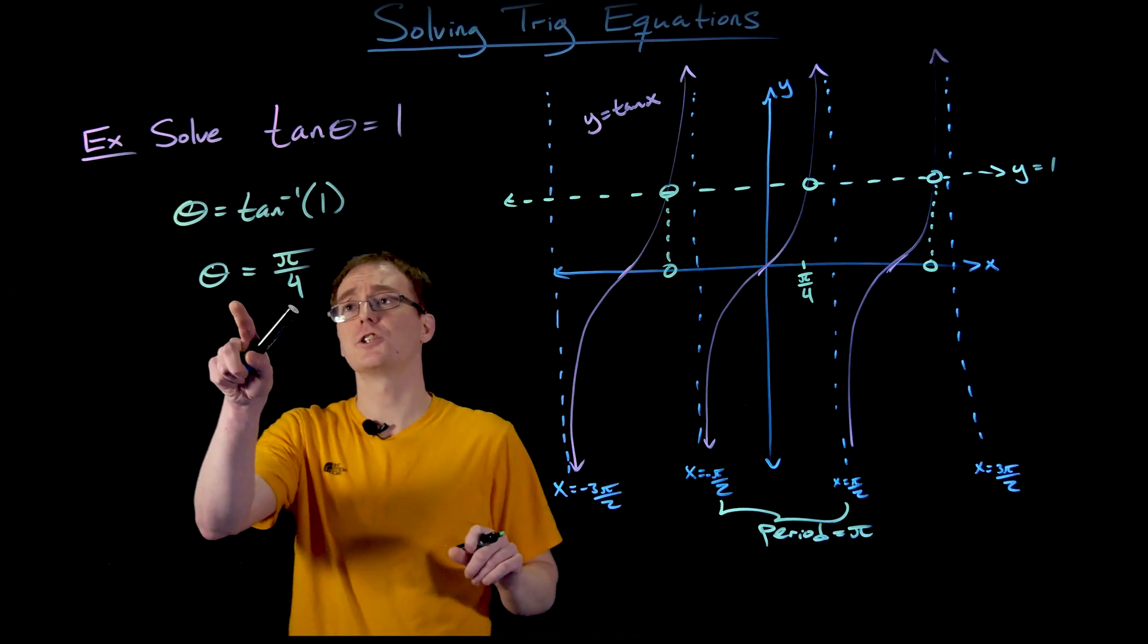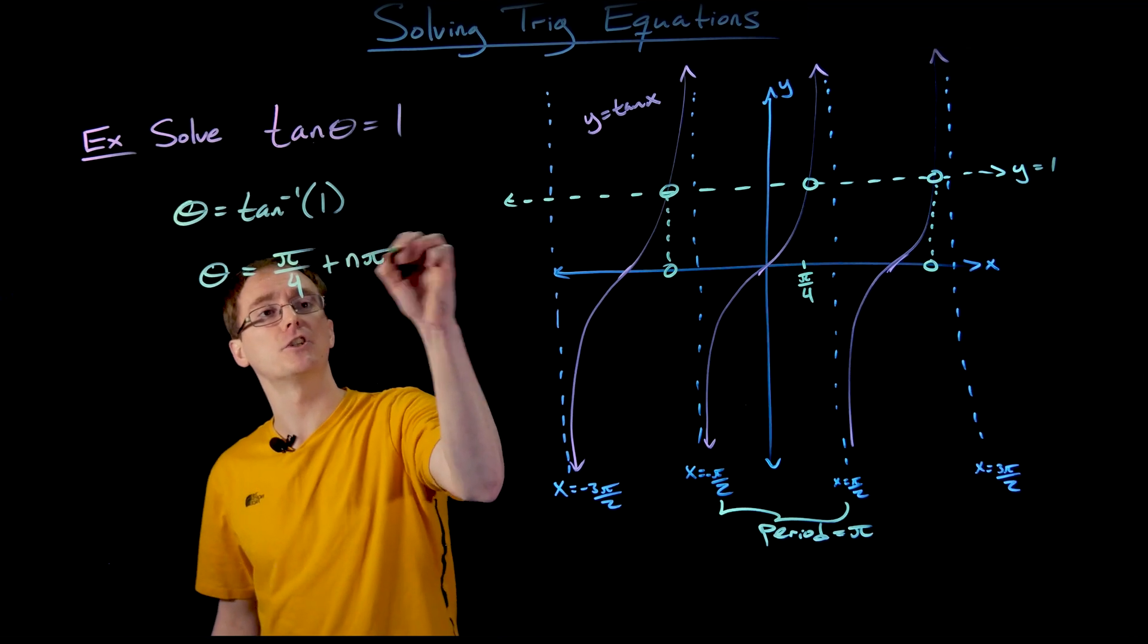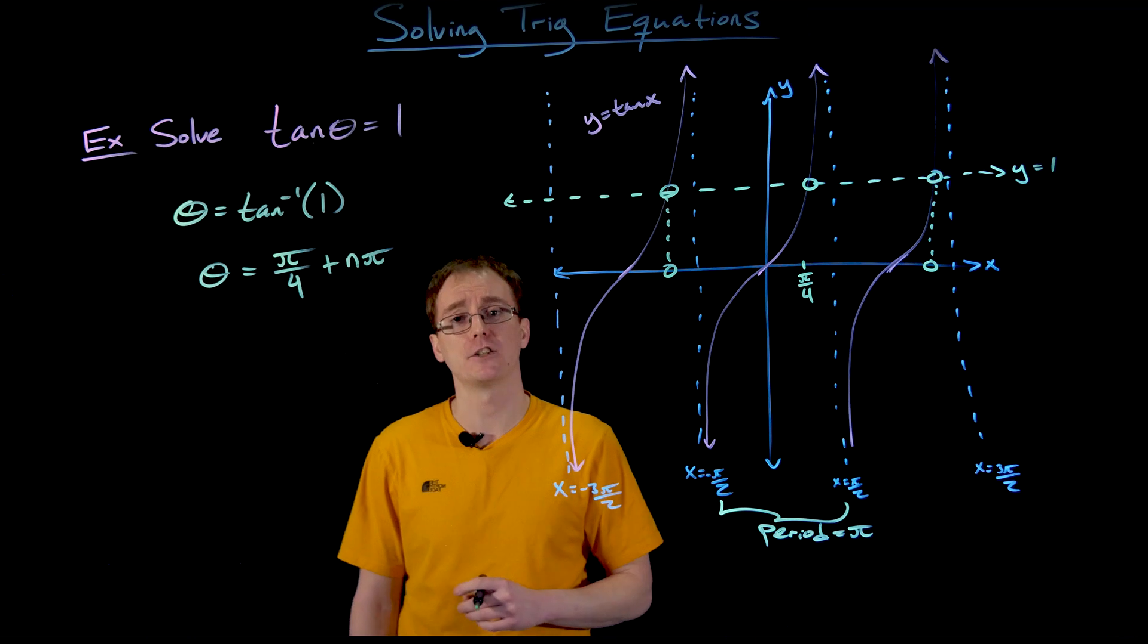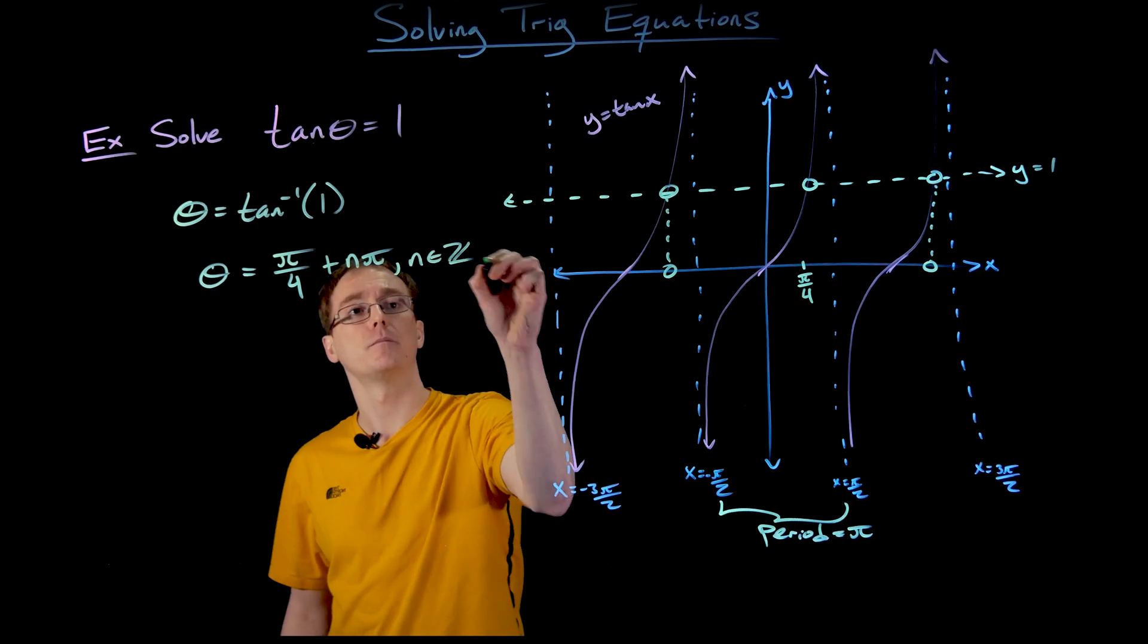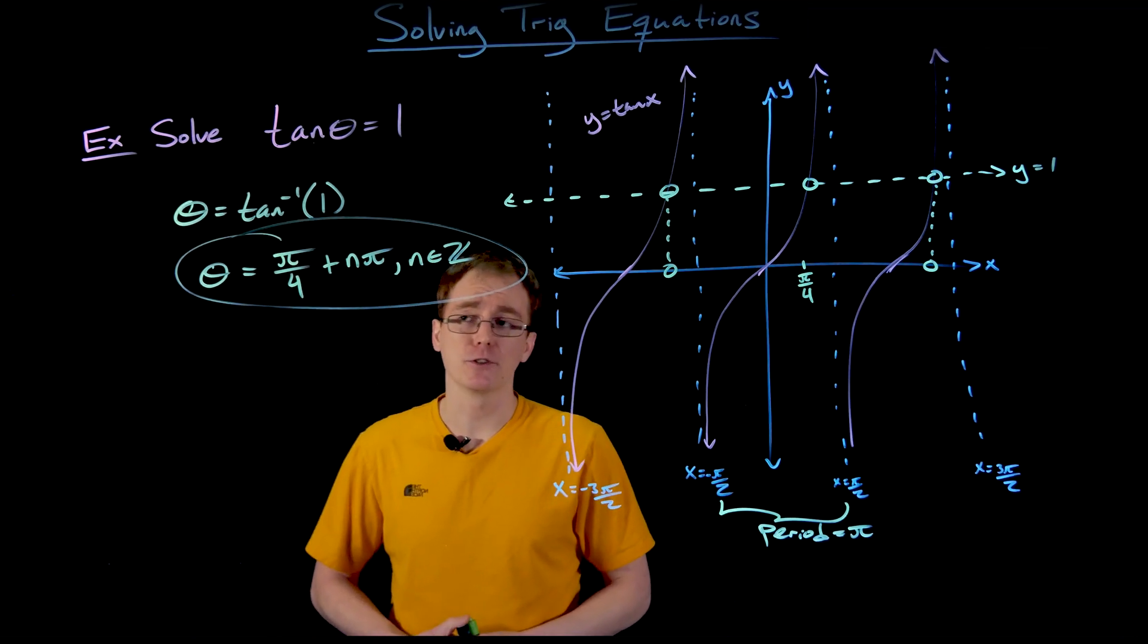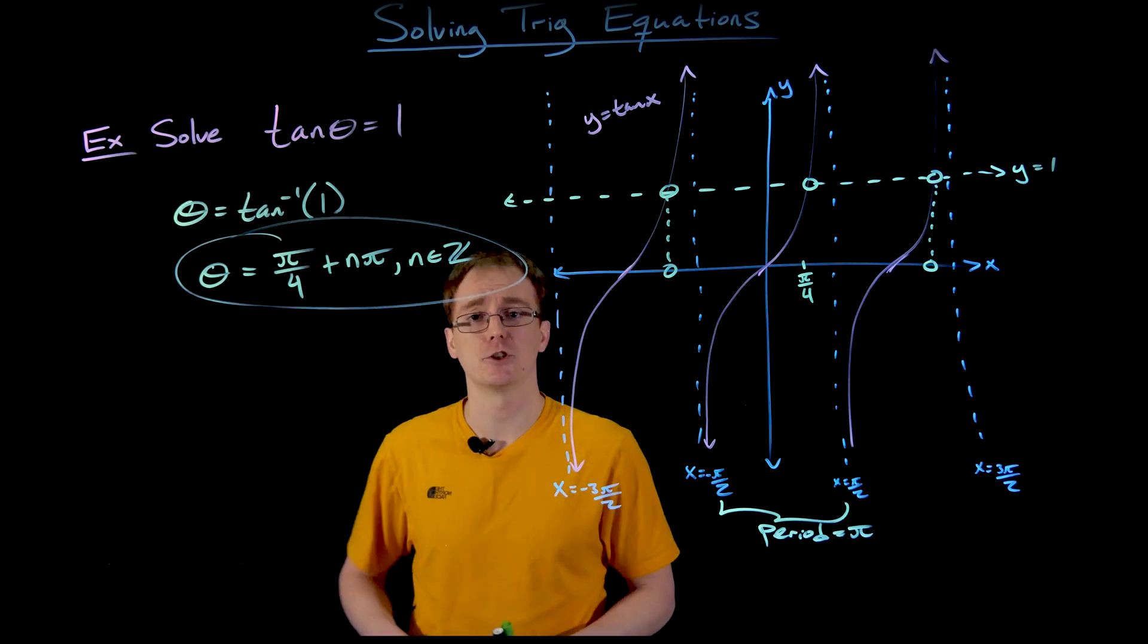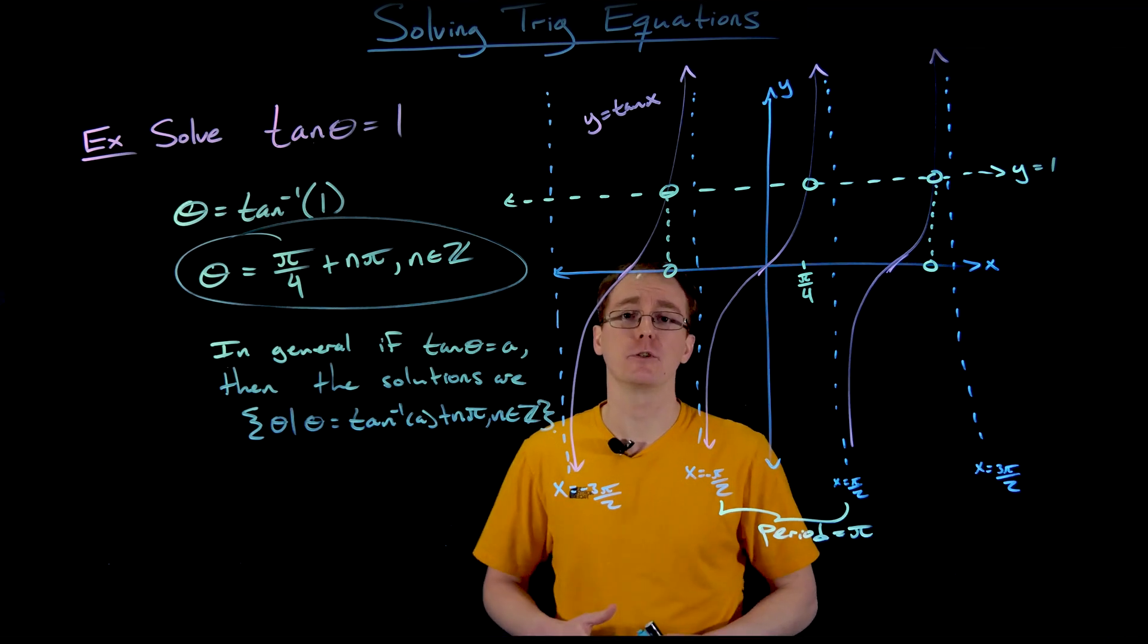Our first solution comes from tangent inverse, and to get all other solutions, we add an integer multiple of π to that first solution. This is much easier than sine or cosine equations because we don't have to find a second solution within a period. Let's summarize what the general solution looks like.